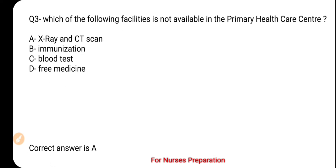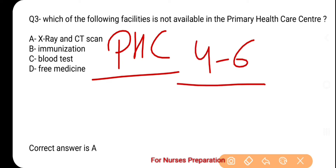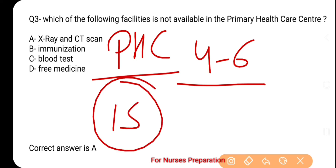And the correct option is option number A — X-ray and CT scan. At a PHC (Primary Health Care Center), a medical officer oversees operations. It has 4 to 6 beds and provides facilities including blood tests, immunization, free medicines, vital statistics, health education, and referral services. However, X-ray, CT scan, MRI, and USG are not available at a PHC. A PHC has approximately 15 designated staff members.